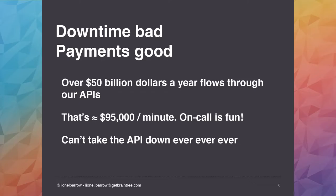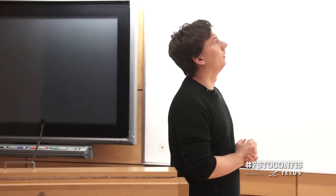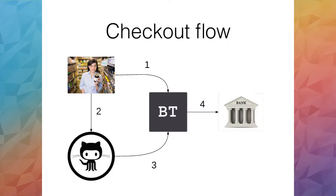We actually do a lot of volume. The last public number, announced around October, was something on the order of $50 billion a year flowing through our primary gateway. When I'm talking to new hires, I put it this way: you'll be on call for a system that handles about $100,000 a minute. To reiterate — we can't take the API down ever. It's not just that we lose money or trust from our business; we're supporting thousands of other businesses.